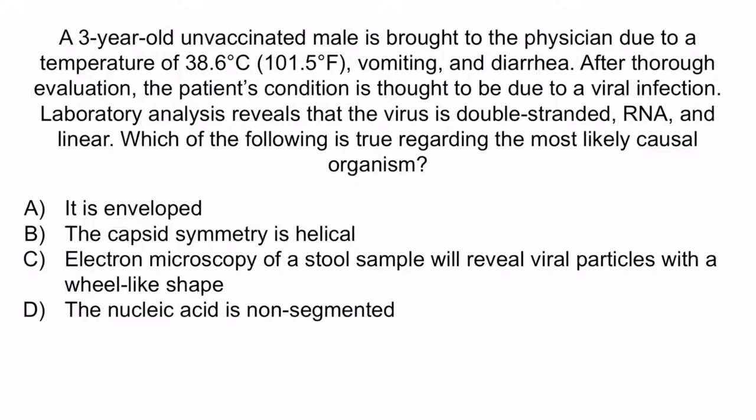Now let's review with a question. A three-year-old unvaccinated male is brought to the physician due to a temperature of 38.6°C (101.5°F), vomiting, and diarrhea. After thorough evaluation, the patient's condition is thought to be due to a viral infection. Laboratory analysis reveals that the virus is double-stranded RNA and linear. Which of the following is true regarding the most likely causal organism? A: it is enveloped. B: the capsid symmetry is helical. C: electron microscopy of a stool sample will reveal viral particles with a wheel-like shape. Or D: the nucleic acid is non-segmented.